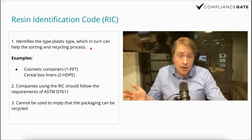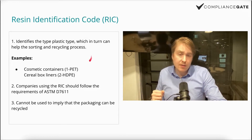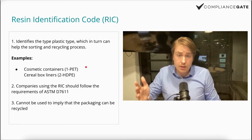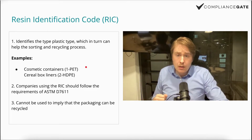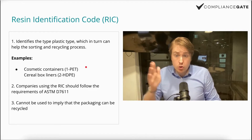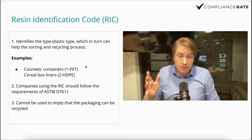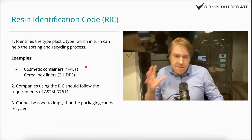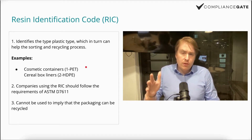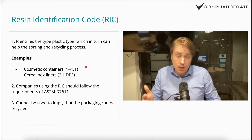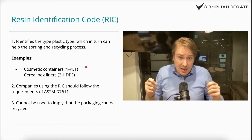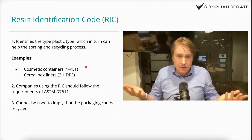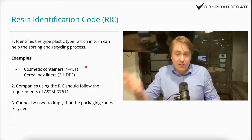You have different codes depending on the type of plastic — code one for PET, two for HDPE, and so on. Companies using this code should also follow the requirements of ASTM D7611, a standard available on the ASTM website that you will likely have to purchase. Something very important: you cannot use the RIC to imply that your packaging can be recycled. The presence of the Mobius loop and the code doesn't magically make, say, a PVC plastic recyclable.